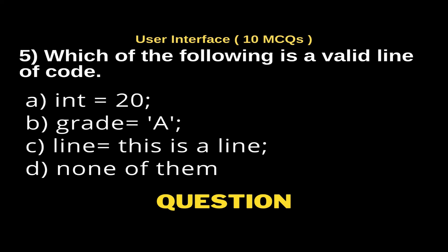Question 5: Which of the following is a valid line of code? Options: a) int = 20, b) grade = 'A', c) line = this is line, d) none of them. The right answer is option b, grade = 'A'.